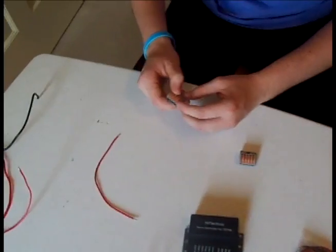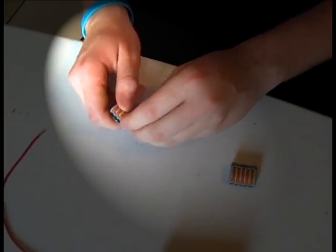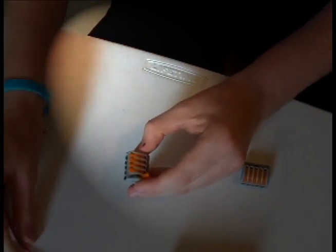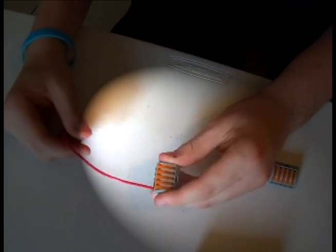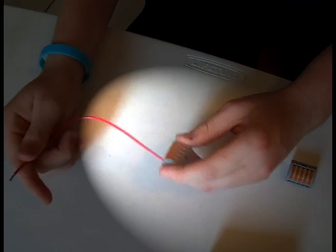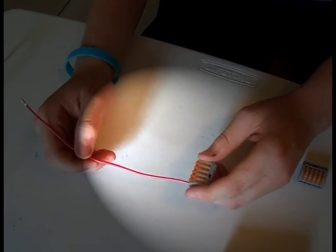The Wago connector works by lifting up a little lever, putting the wire in, and snapping it down. You don't need any special tools, you can just do it with your hands.